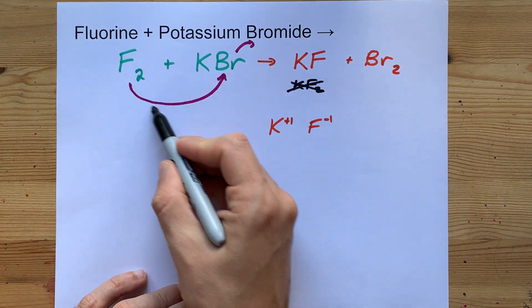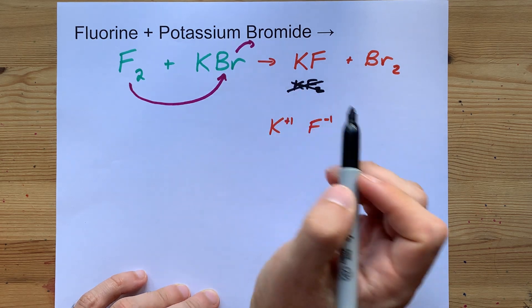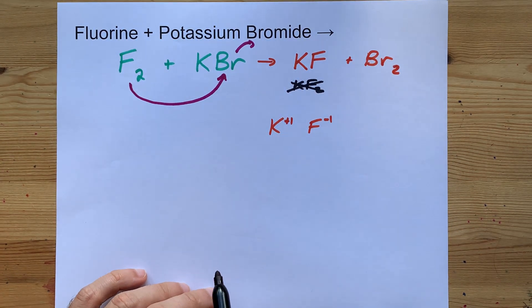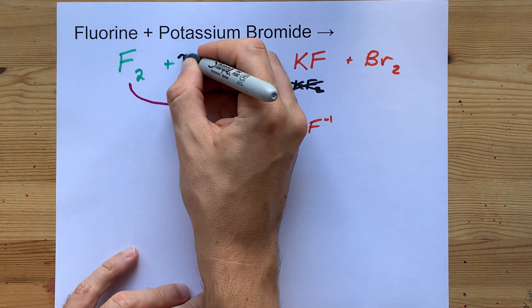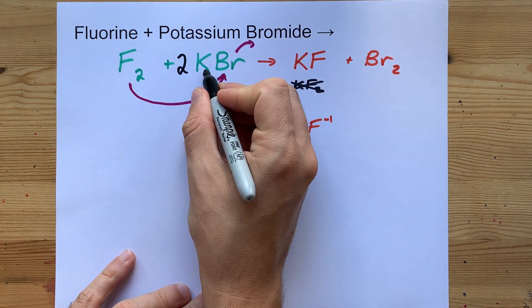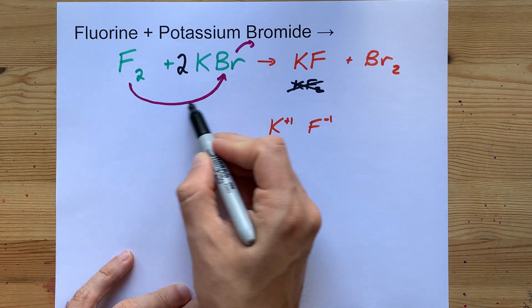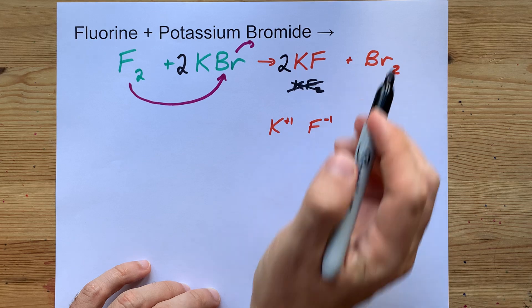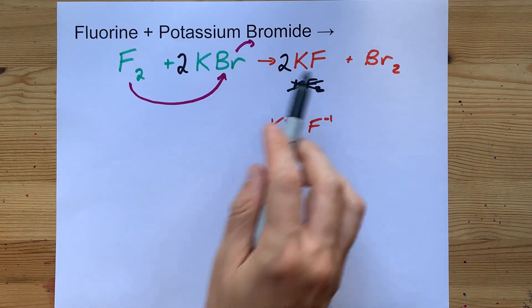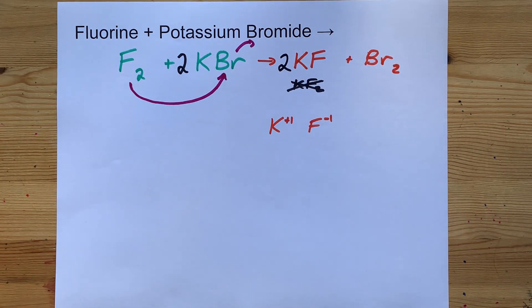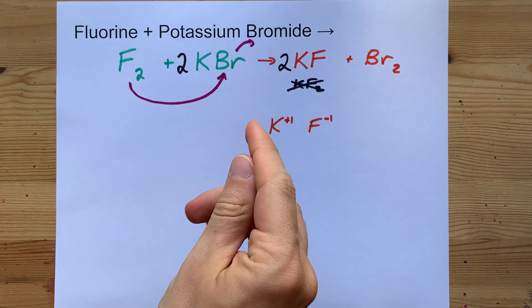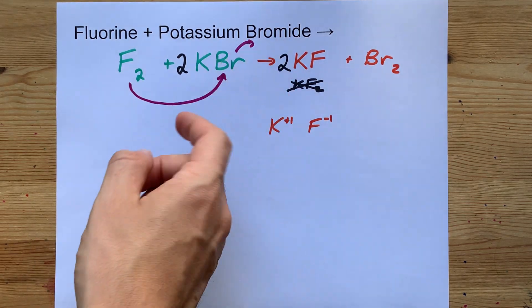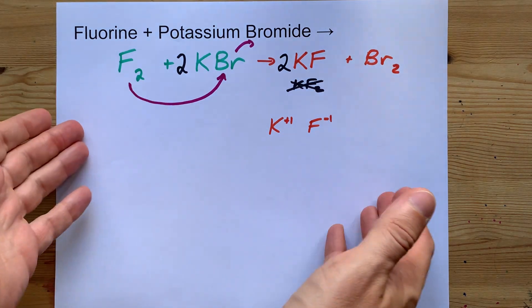A single F displaces the Br, and you get KF, and then Br₂ is made. To balance it, you'd need two of these because one F is displacing each Br. And you'll need two KFs being produced because each F produces one of those as well. It's called a single displacement reaction because you have a single element displacing another in a compound.